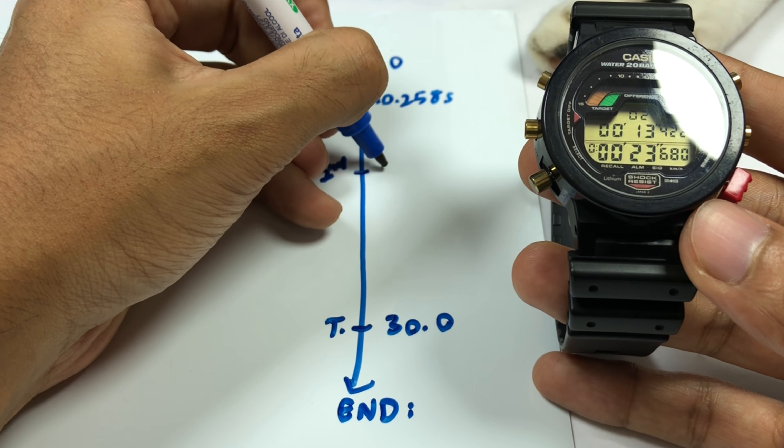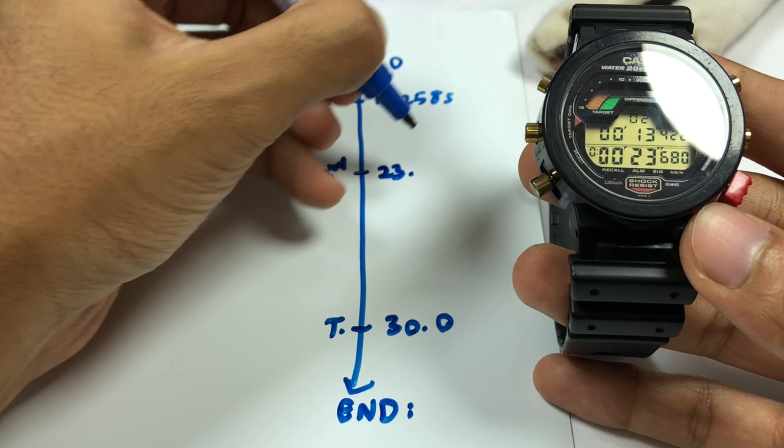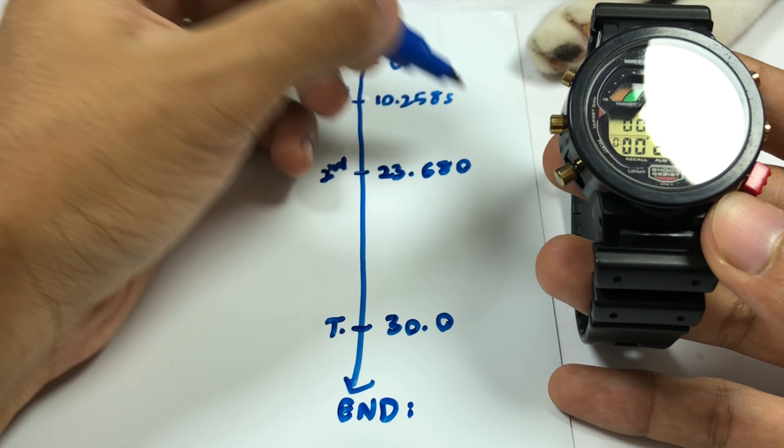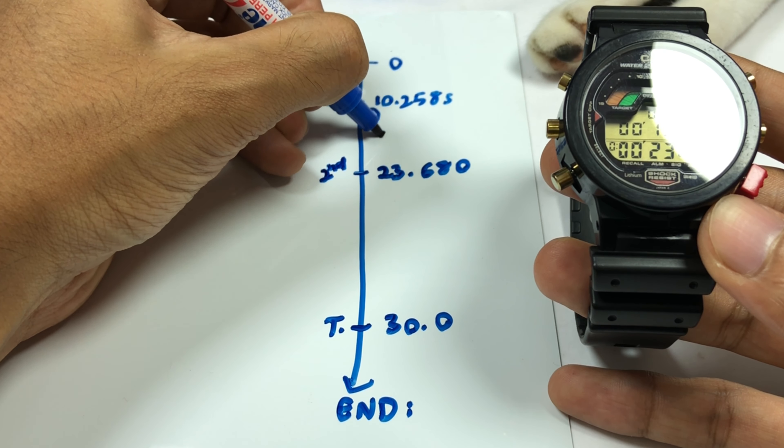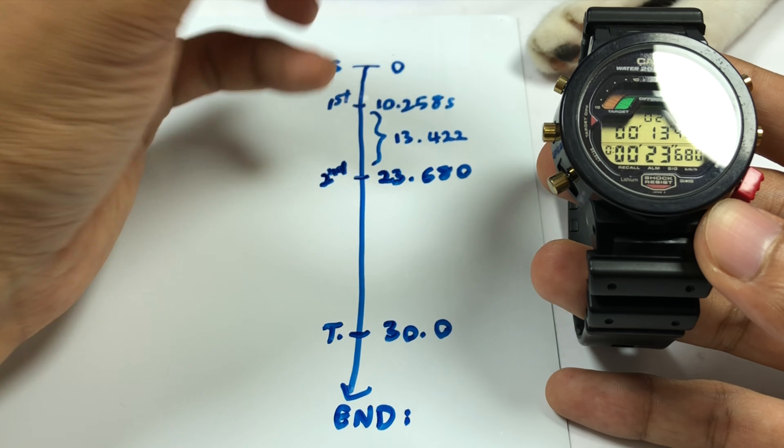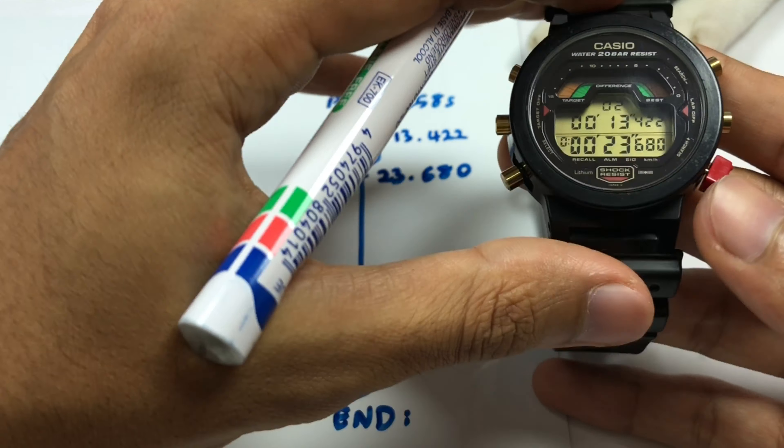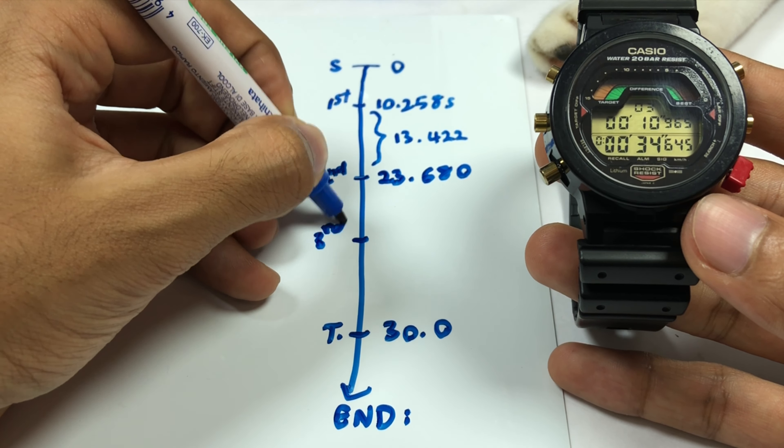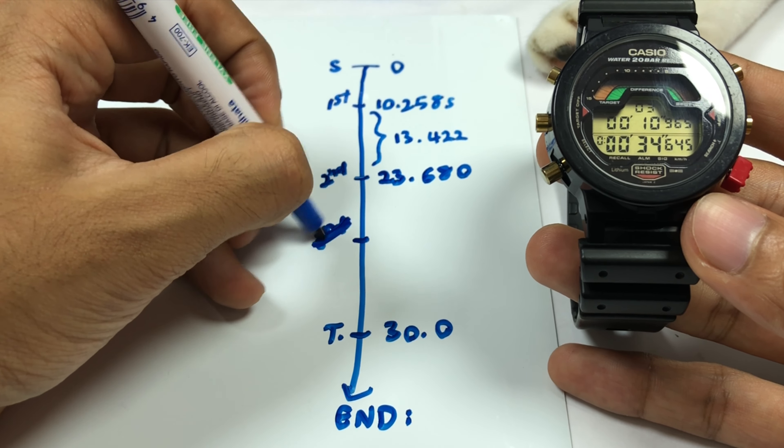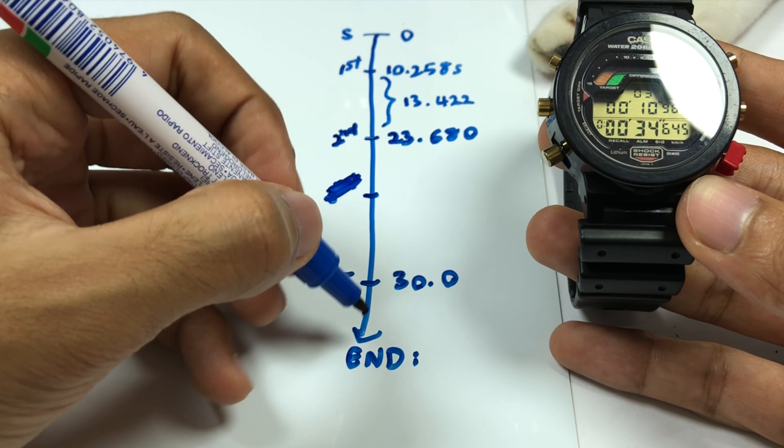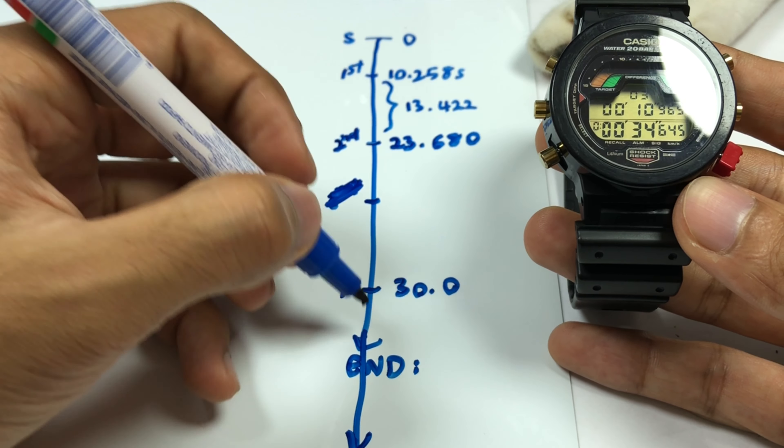The lap time difference here is 13.422. Next, third lap. Actually, 30 seconds should be over here. Yeah, I should have drawn it here.